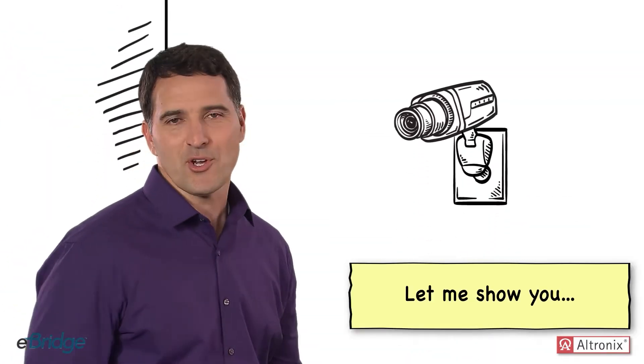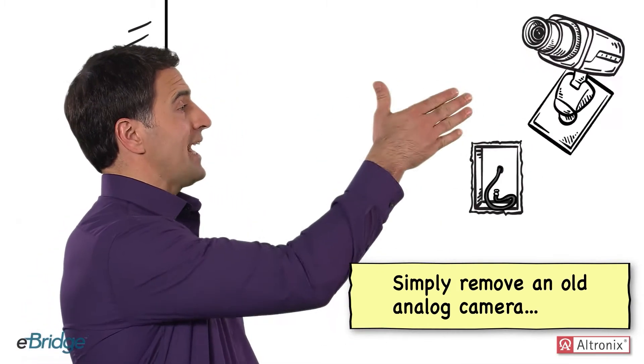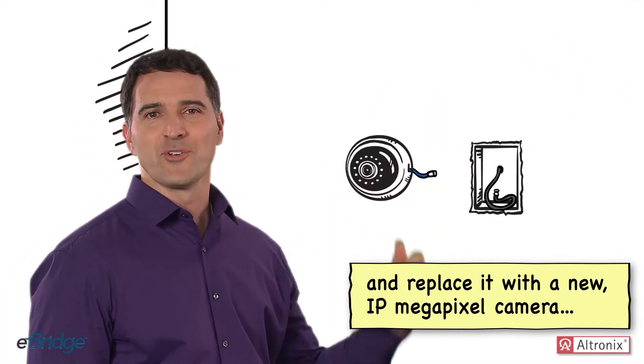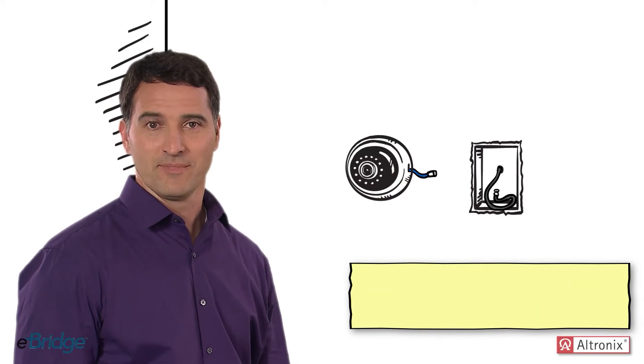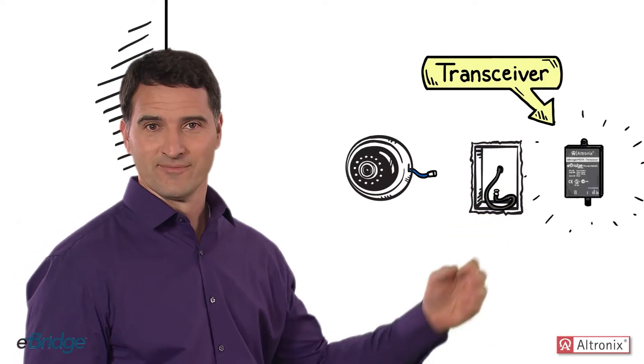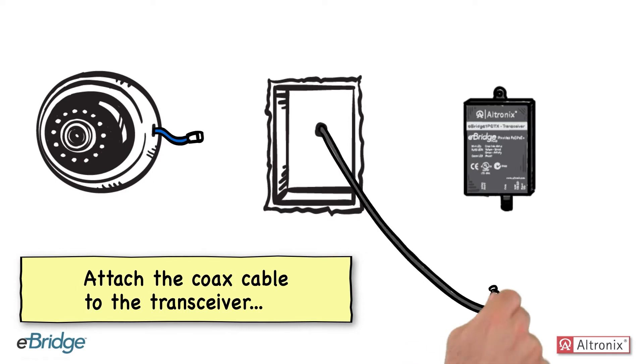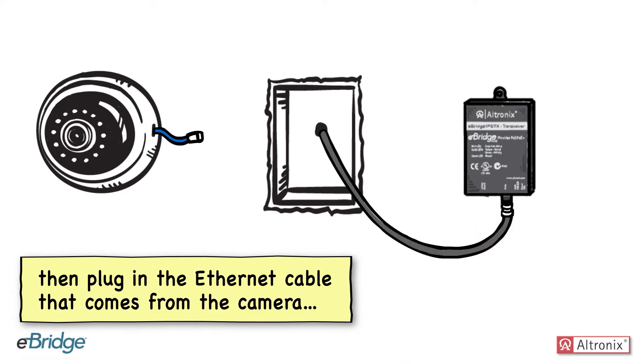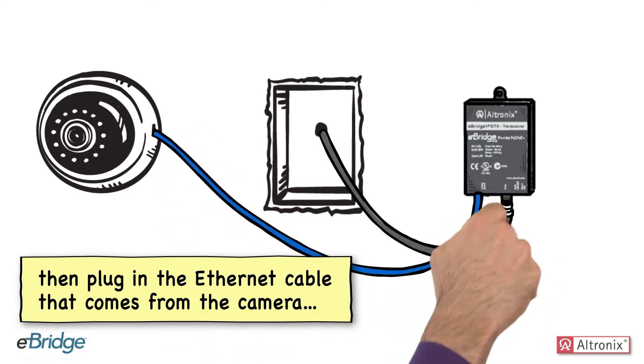Let me show you. Simply remove an old analog camera and replace it with a new IP megapixel camera and an eBridge transceiver. Attach the coax cable to the transceiver. Then plug in the Ethernet cable that comes from the camera.